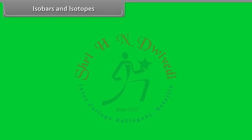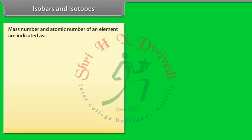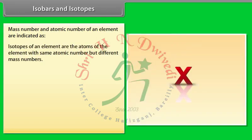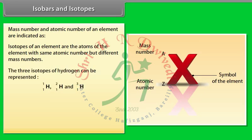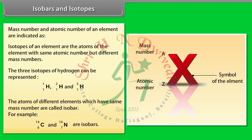Isobars and isotopes: Isotopes of an element are the atoms of the element with the same atomic number but different mass numbers. The three isotopes of hydrogen are a well-known example. The atoms of different elements which have the same mass number are called isobars.